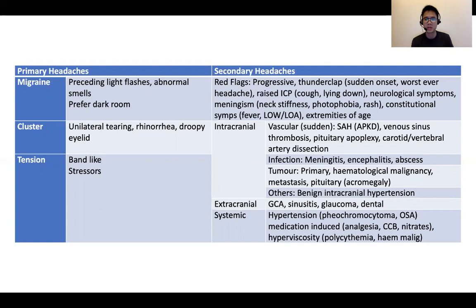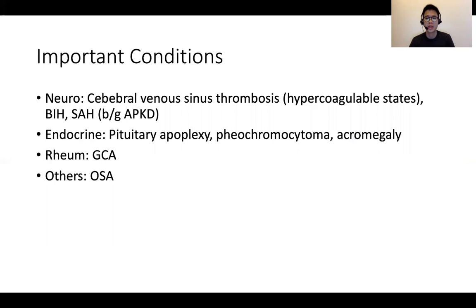In terms of intracranial causes, there are different ways of classifying them. I'd like to point out a few important conditions. For the PACES exam, especially Station 5, important conditions include cerebral venous sinus thrombosis in the context of a hypercoagulable state — such as antiphospholipid syndrome or hyperviscosity in a hematological malignancy. Benign intracranial hypertension can have features of raised ICP, and SAH in the context of adult polycystic kidney disease is also worth considering.